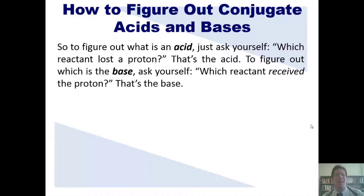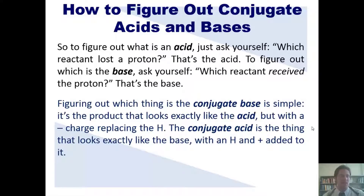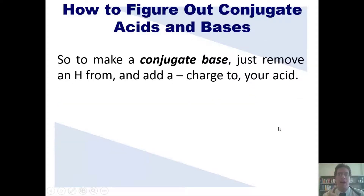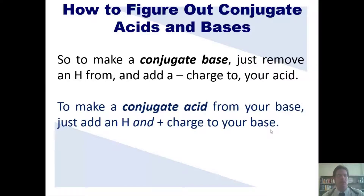To sum this up: to figure out what the acid is in an acid-base equilibrium reaction, ask yourself which reactant lost a proton — whichever one did, that's the acid. To figure out which thing is the base, ask which reactant received the proton. The conjugate base is the product that looks exactly like the acid but with a minus charge replacing the hydrogen. The conjugate acid looks exactly like the base but with a hydrogen and a plus charge added. To make a conjugate base, remove a hydrogen and add a negative charge to your acid. To make a conjugate acid, add a hydrogen and a plus charge to your base.